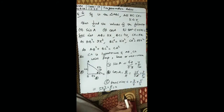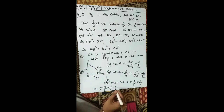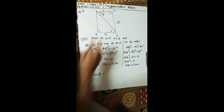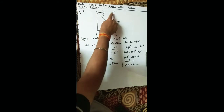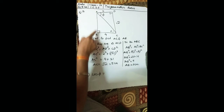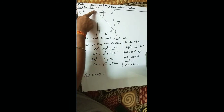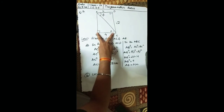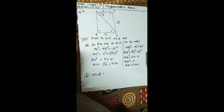Now the seventh question. The figure shows two right-angled triangles: triangle ABC right-angled at B, and triangle ADC right-angled at D. Given measurements are 2 cm, 4 cm, and the square root of 21. We need to find AB and AC.